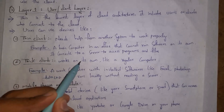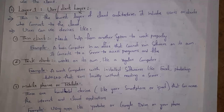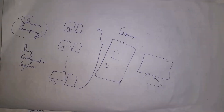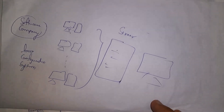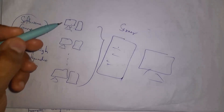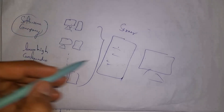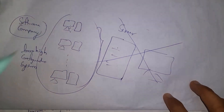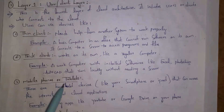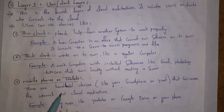The second type is thick clients. Thick clients work on their own like a regular computer. For example, in a software company where all computers are high-configuration systems, all computers can work on their own without depending on a server. So we call these computers thick clients.